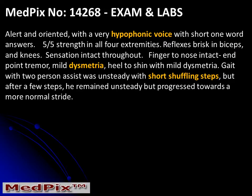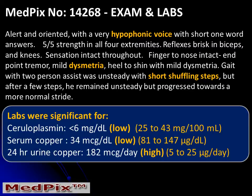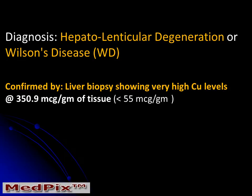We want to add some very important lab values. Ceruloplasmin was low, serum copper was low, and the 24-hour urine copper was high. Obviously, someone was thinking about an error of copper metabolism or Wilson's disease. The diagnosis in this case is hepatolenticular degeneration, or Wilson's disease, which was confirmed by a liver biopsy showing very high copper levels.